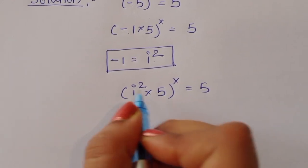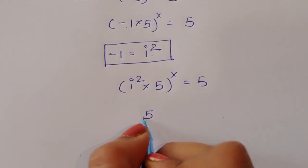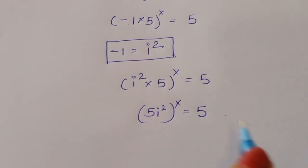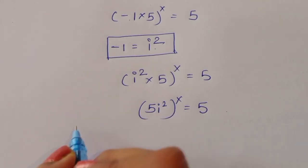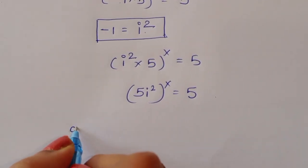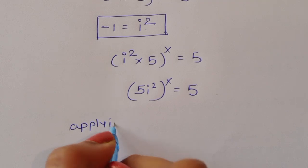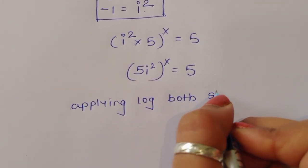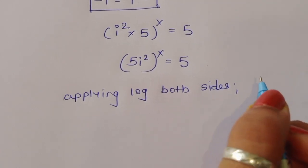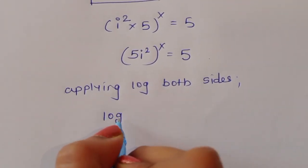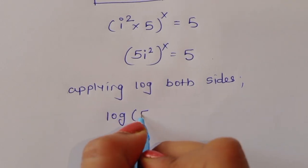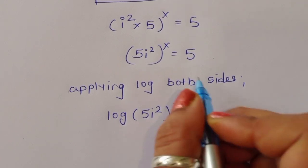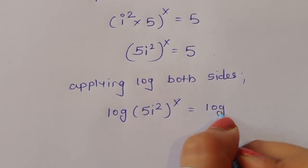Now we can write this as (5i²)^x is equal to 5. Now we can apply log to both sides. Applying log to both sides, we will get: log of (5i²)^x is equal to log of 5.